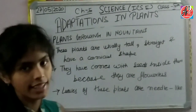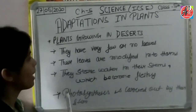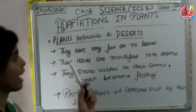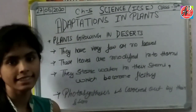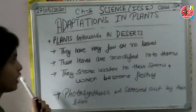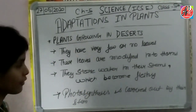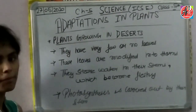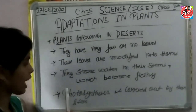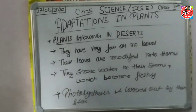Now let's see how plants survive in deserts. We have seen plains and mountains. Now the plants growing in deserts: they are very few and they face very harsh conditions. Their leaves are modified into thorns, and in this form they are like spines. They store water in their stems, which become fleshy, like the cactus plant.